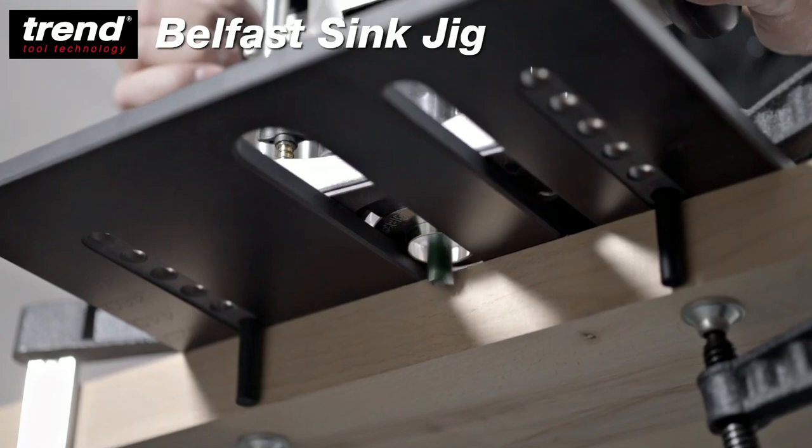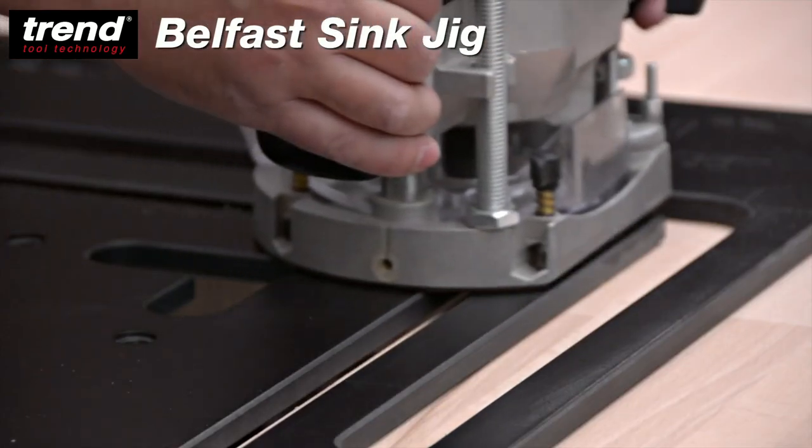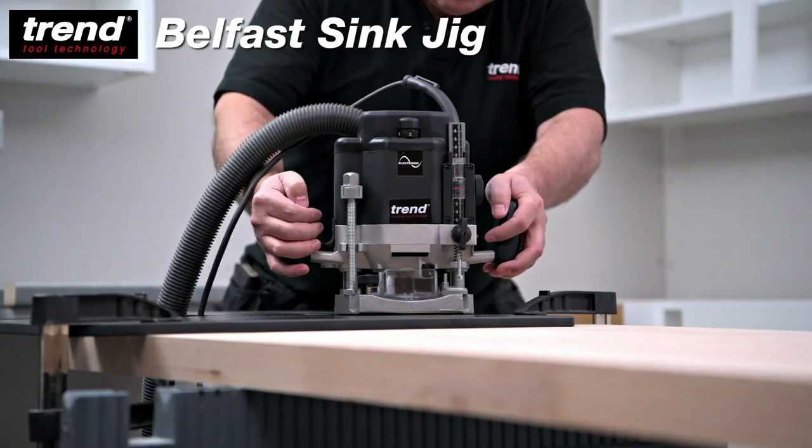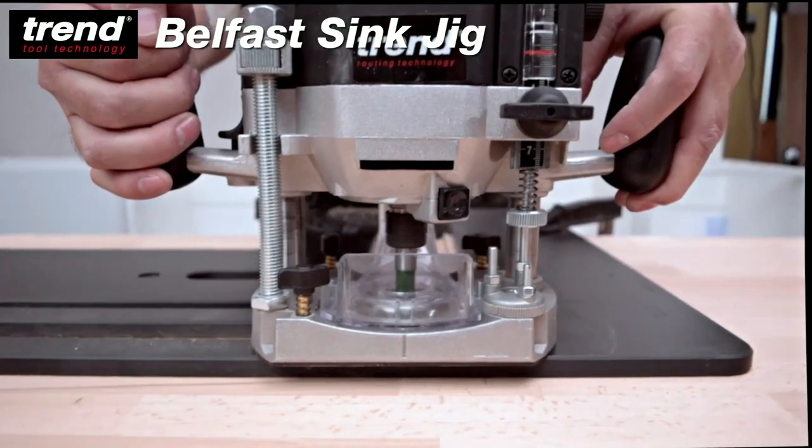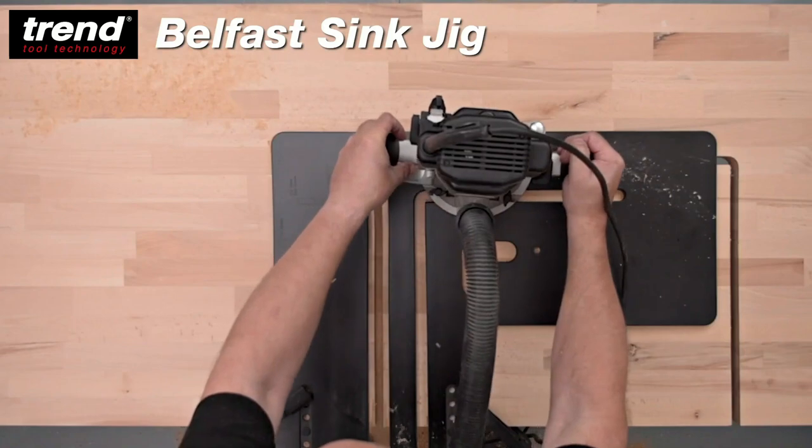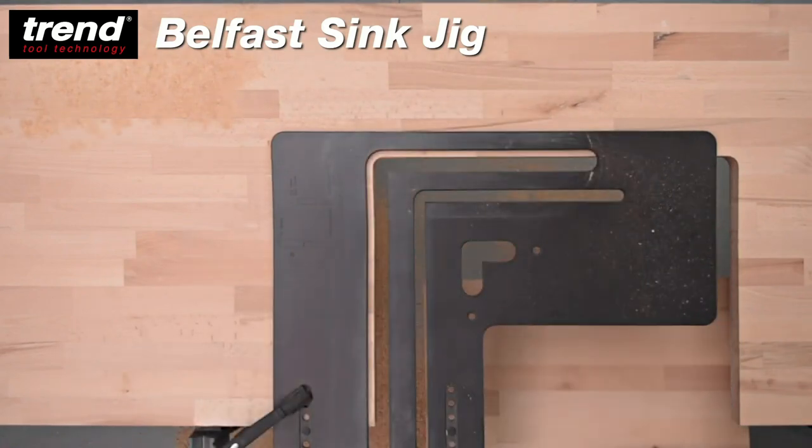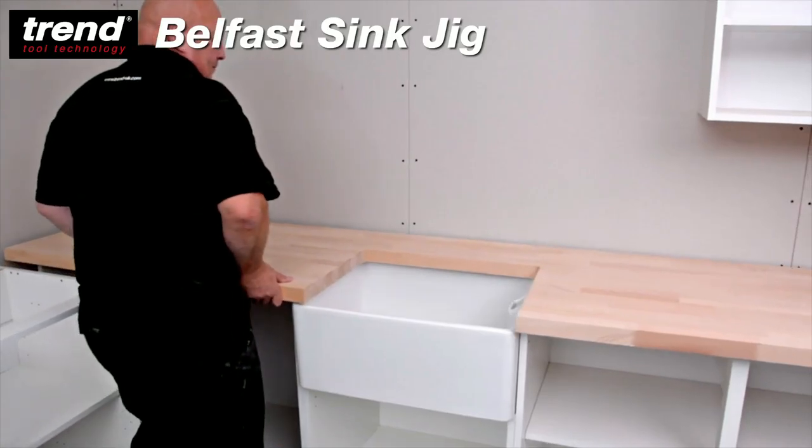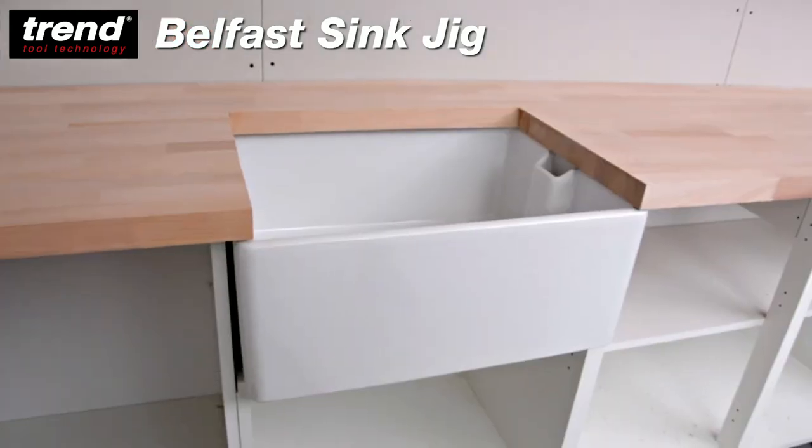A portable plunge router with a 12.7mm shank capacity and a minimum of 1300W. A template guide bush with a 30mm outside diameter for the main recess and a 16mm outside diameter for the water drip groove.